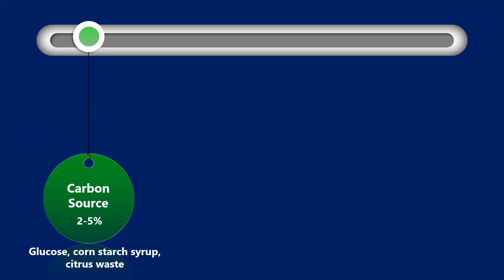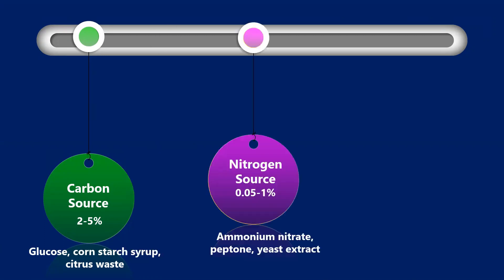The next important parameter is the nitrogen source. Ammonium nitrate, yeast extract, and peptone can be used as a source of nitrogen. The optimum concentration found is 0.05 percent to 1 percent. Maintaining this nitrogen is a little tricky because in the growth phase we require larger amounts of nitrogen to support the growth of the organism.